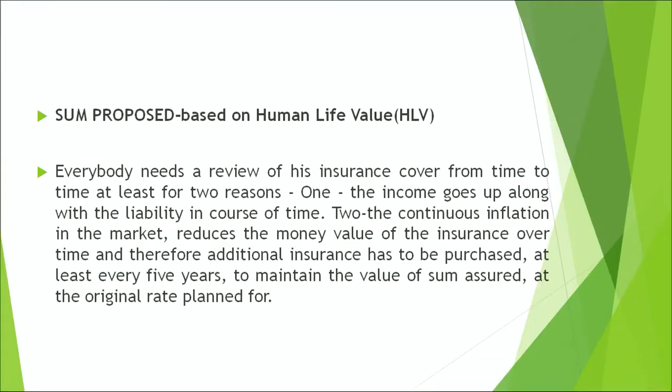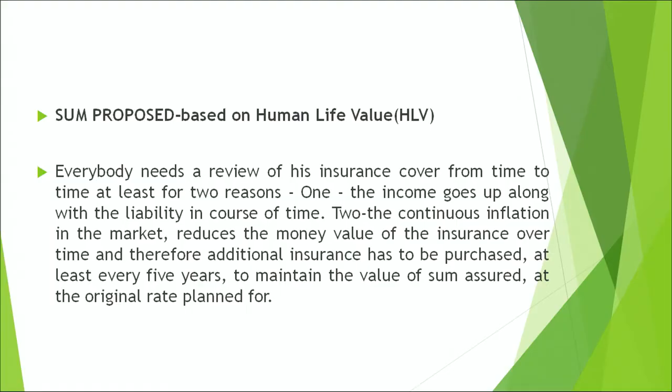Sum proposed is based on human life value — it is basically the sum assured or claim amount, and is based on the fact that a human is considered an income-generating asset. Based on the expected life value and annual income of the individual, a calculation is involved to determine the human life value — what the individual is worth. It is not necessary that any 30-year-old will be offered the same life cover; it depends on their occupation and income, based on which a sum assured is offered by the company.